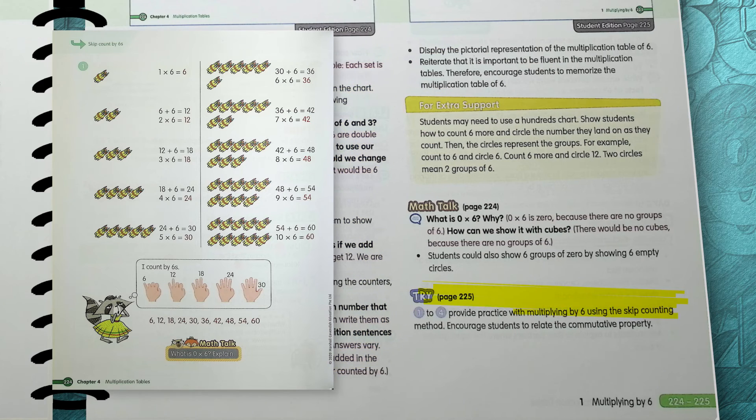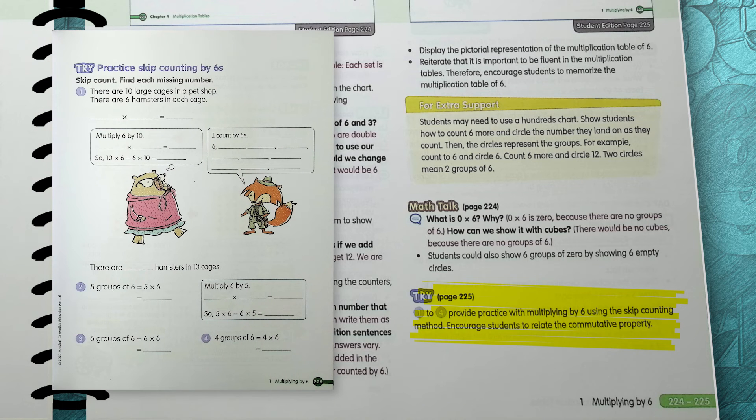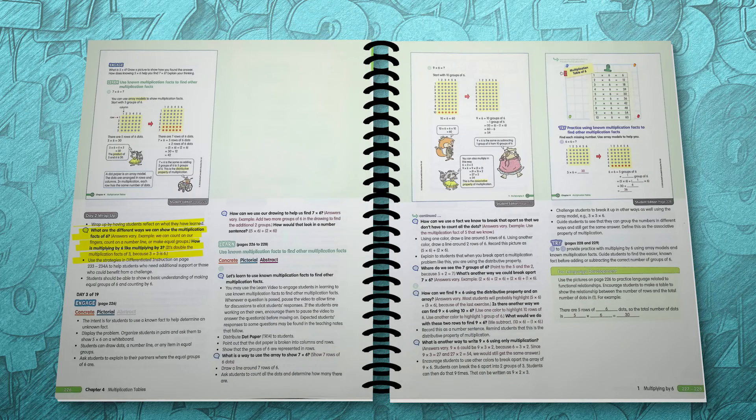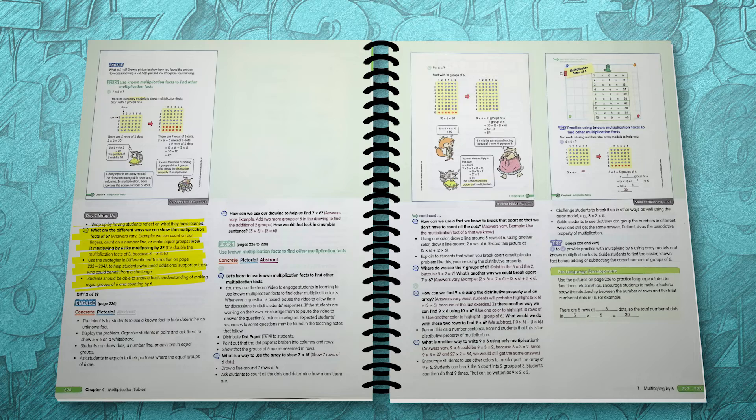After the learn, your students will then work out the strategy in the try section. This ends the day's lesson with a quick wrap-up where you can ask your students how they can multiply by 6 and which strategy they prefer.